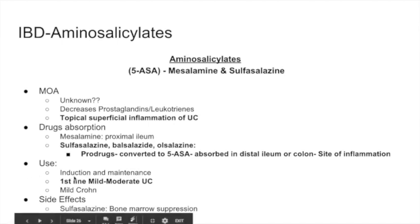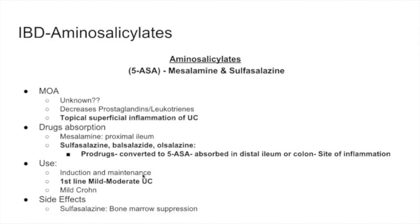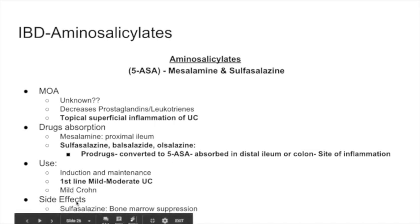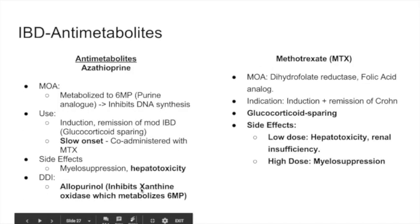Aminosalicylates are used for induction and maintenance of disease, specifically ulcerative colitis — they are first line. They're also used for mild Crohn's disease. A key side effect is that sulfasalazine causes bone marrow suppression.